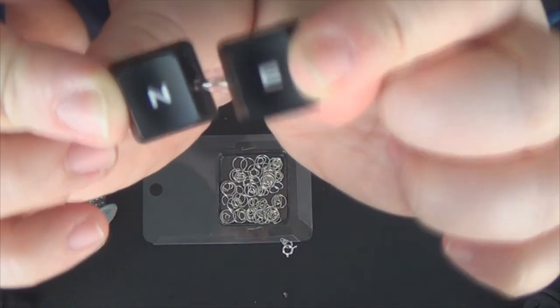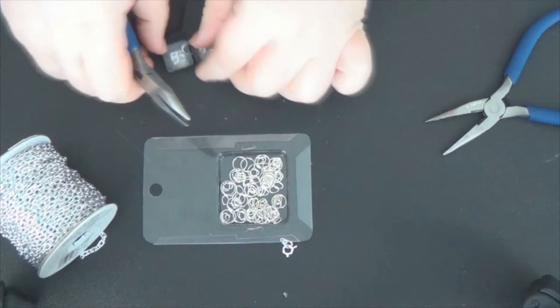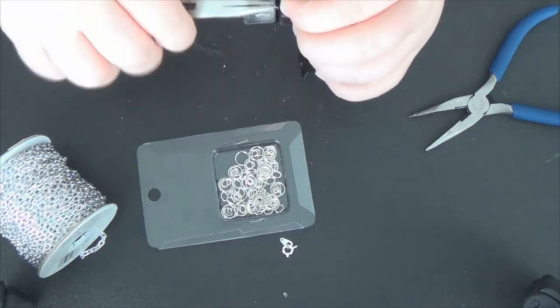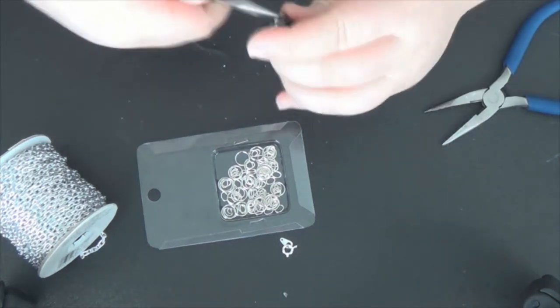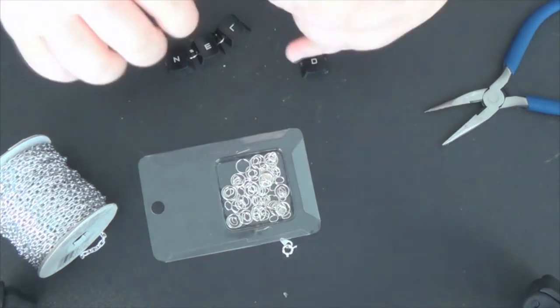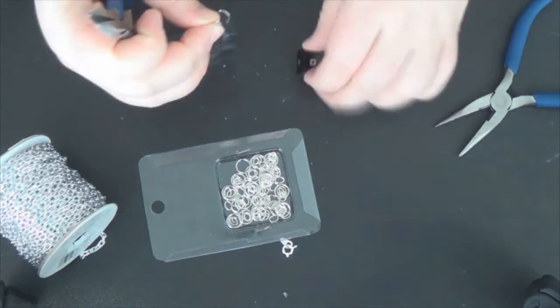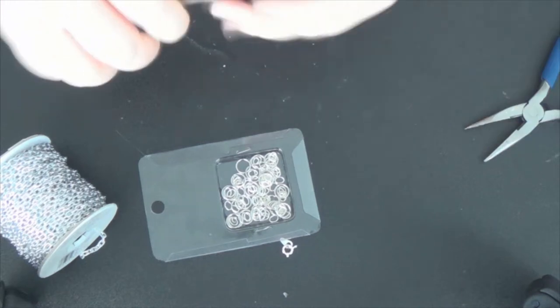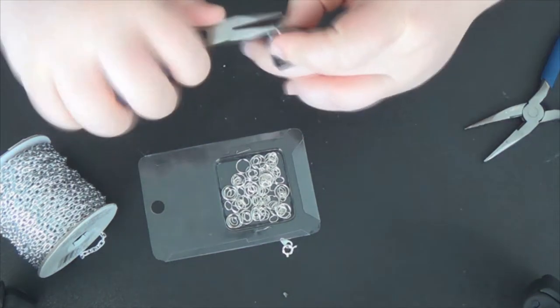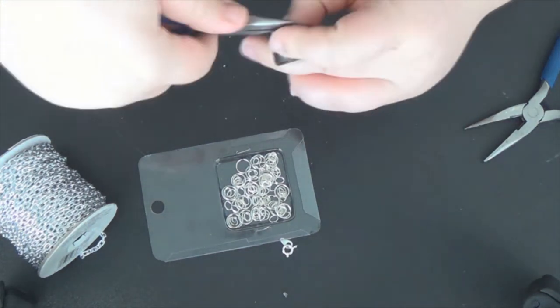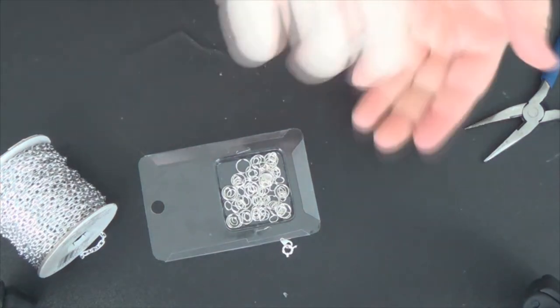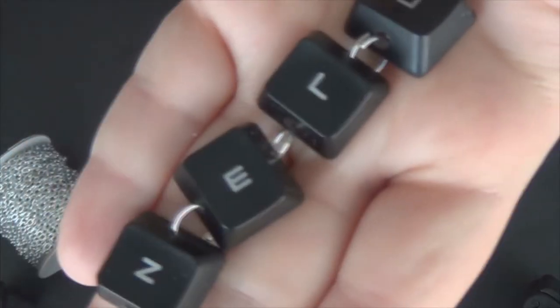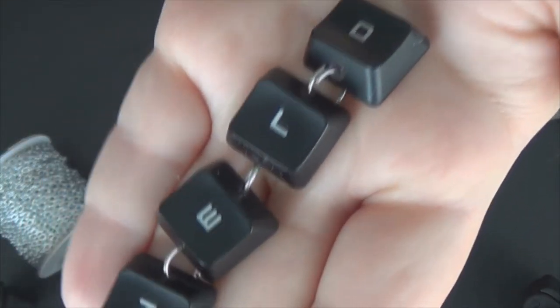So you can see here how they're attached, and you can still tell what it says. So we're basically just going to repeat the process with all of these, and we're just going to keep adding jump rings and keys until we pretty much get the whole word spelled out, and all nice and secure. So once that's done, we're going to go ahead and we're going to add our chain, but here you can see how it's spelled out and how it's all attached with those jump rings.